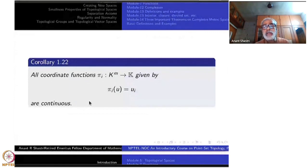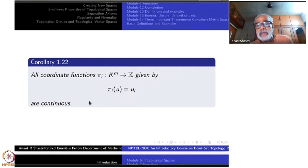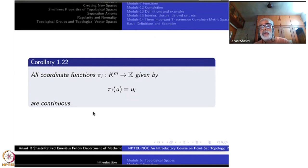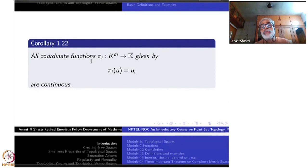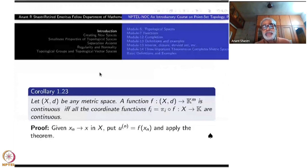As a corollary, the projection maps π_i: K^m → K, sending u to its i-th coordinate, are continuous. If u^p → u, then π_i(u^p) = u^p_i → u_i = π_i(u). This follows directly from one direction of the theorem we just proved. So coordinate functions are continuous.